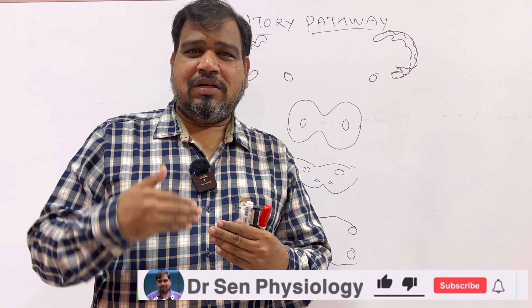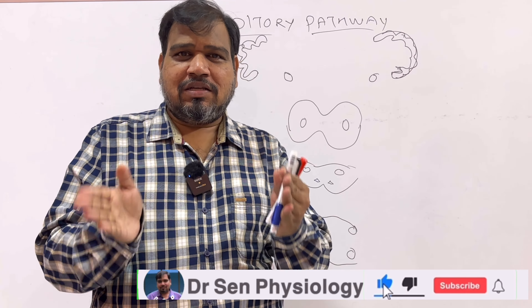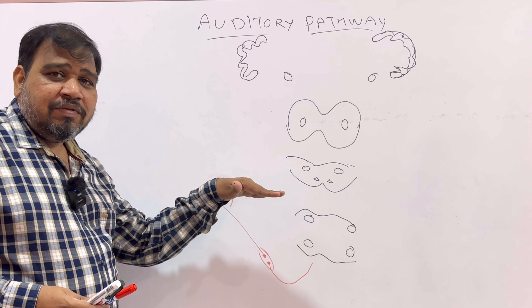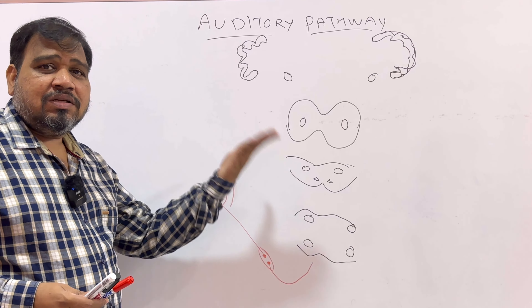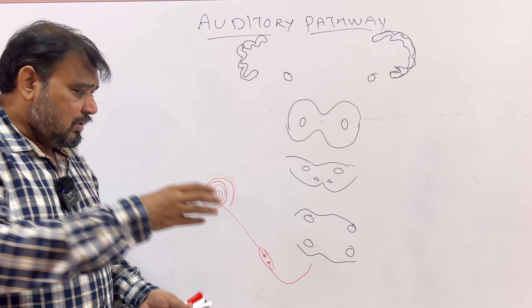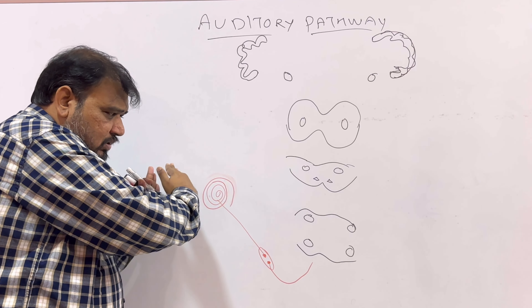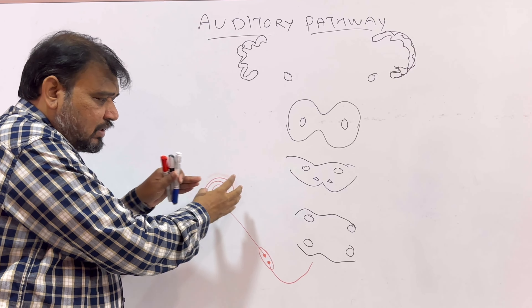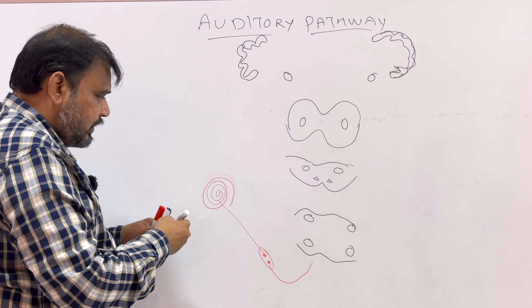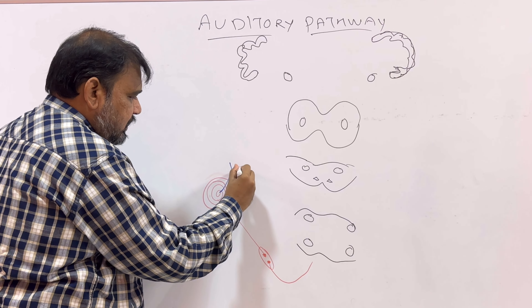Good morning students. Today we are entering into the final topic of hearing: the auditory pathway. In my last three previous videos, I clearly discussed about the mechanism of hearing parts 1, 2, and 3. We ended up at the organ of Corti and the tilt of the hair cells which causes the action potential.